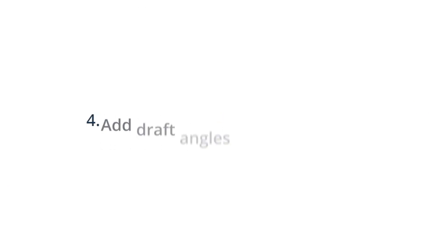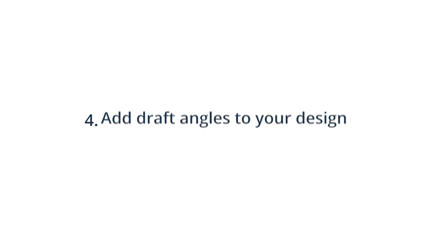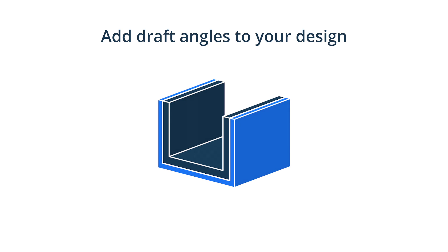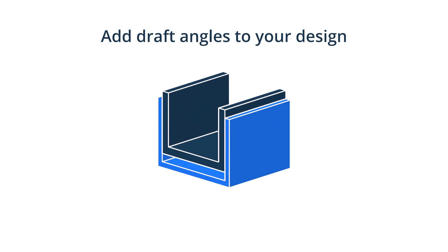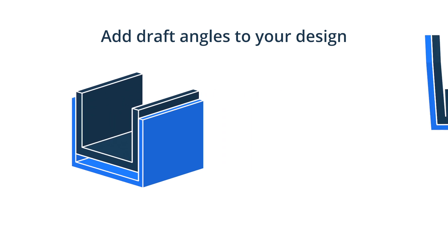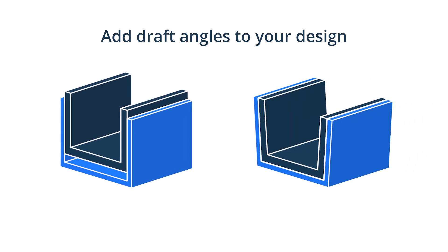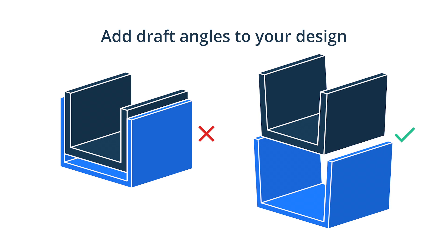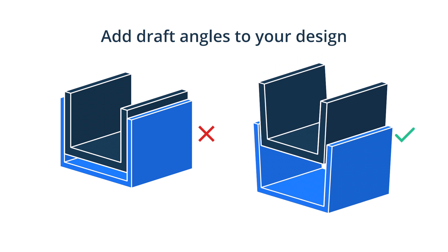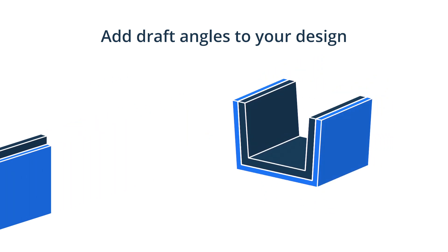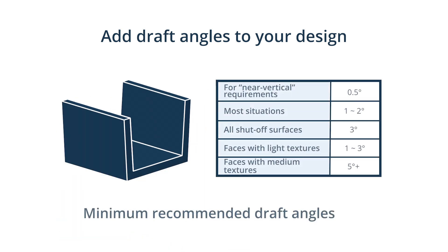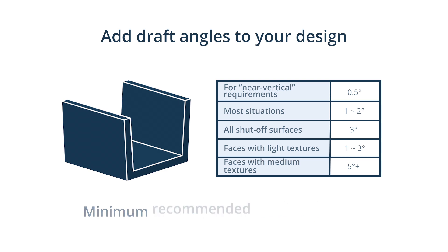Tip 4: Add draft angles to your design. Using injection molding for a part with vertical walls will cause it to get stuck as the part contracts when it cools, which could damage the ejector pins and even the mold. Design the walls of parts with a slight slant — called draft — to avoid this problem. Different surfaces require varying draft angles, and textured surfaces require the biggest draft angles. Some common surfaces found in injection molding and their minimum draft angles are as follows.